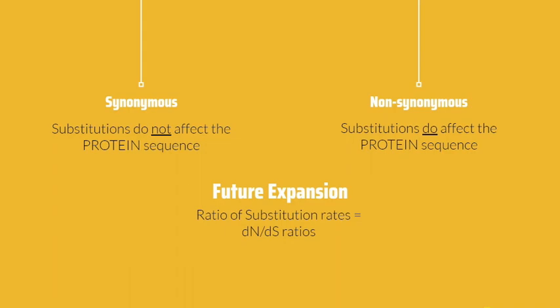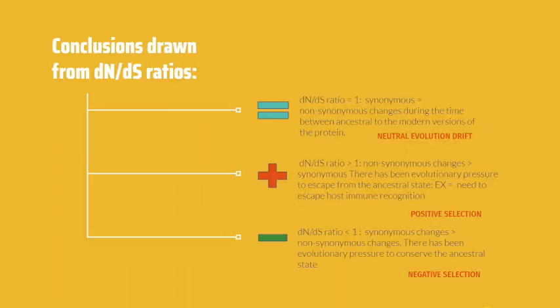Therefore, a future expansion of this project would include allowing for a calculation of the dN/dS ratios from these mutations. A comparison of these values to 1 tells us whether or not there are more synonymous or non-synonymous mutations, and what type of evolution, either neutral, positive, or negative, has occurred in comparison to its ancestor.